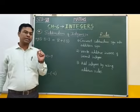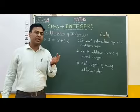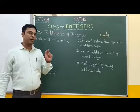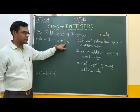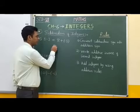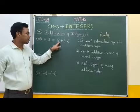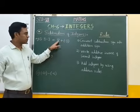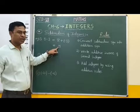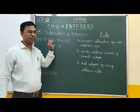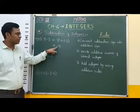As per the addition rules, if one integer is positive and one integer is negative, then subtract the smaller number from the greater number. Here, 8 minus 3 equals 5. Between these two numbers, 8 is greater, and the sign of 8 is positive. Therefore our answer is positive 5. We can say that 8 minus 3 is equal to 5.